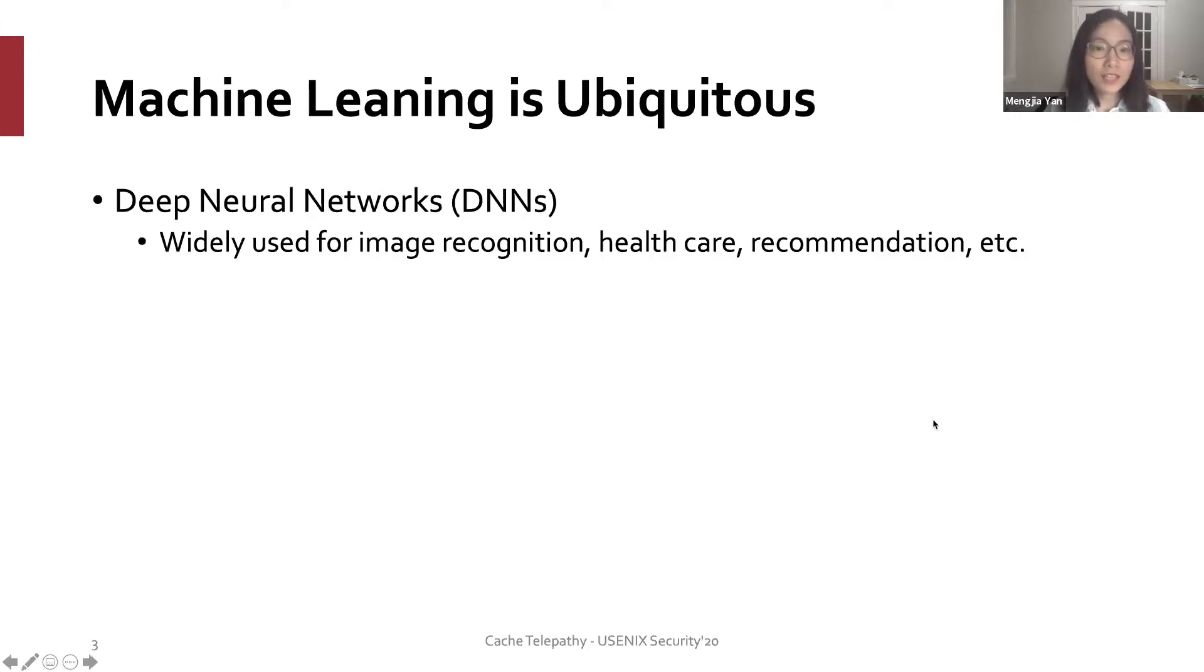To show how Cache Telepathy works, let's start from the background. DNNs are widely used for many applications nowadays, including image recognition and healthcare data analysis.